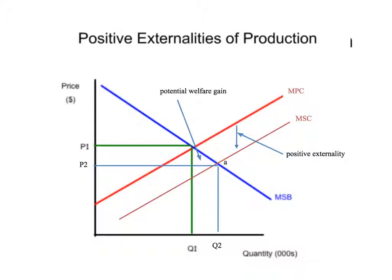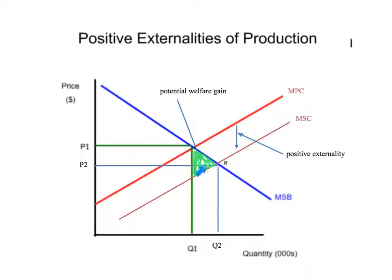Here it is — check it out. As a result of the training, the marginal private costs: the firm paid this price, P1, Q1. But as a result of the training, there's actually an entire benefit to society, and that benefit is represented by this triangle right here marked in green. When a private firm — a school — pays a teacher to go off and get training, they are incurring the cost. But the benefit to society is shown by moving the marginal social cost curve down. The optimal point of social efficiency would be point A, and so governments get involved to figure out how to capture that benefit and take advantage of this potential welfare gain.